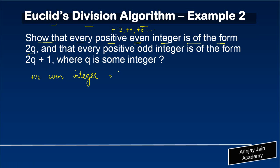This you have to prove is of the form 2q, and that every positive odd integer is of the form 2q + 1, where q is some integer.